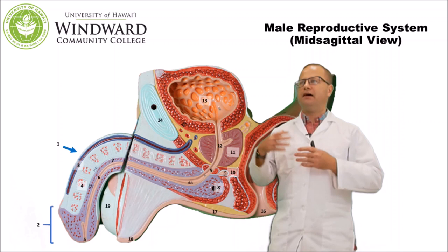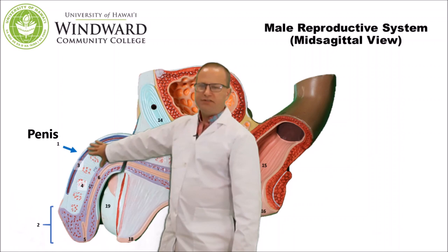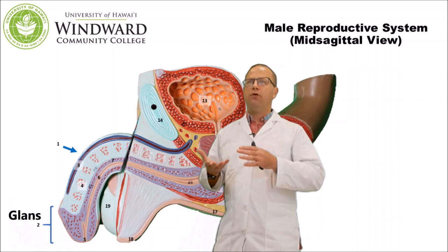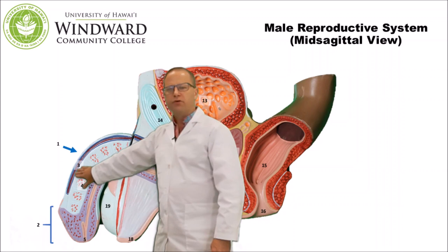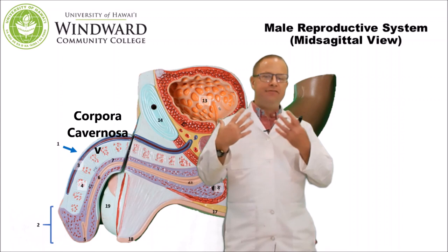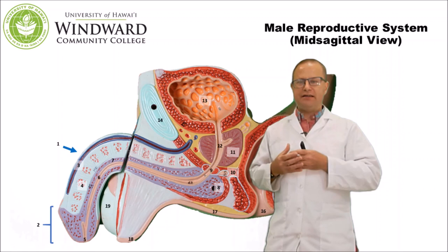Now let's look at the male reproductive anatomy on the ATLE dissectable human torso. Up front is the penis, the organ of intromission. At the tip of the penis is the glans, which contains lots of nerve endings important in male arousal and sexual response. On the dorsal surface is the deep penile vein, important for draining blood after erection. Below that is the corpora cavernosa, erectile tissue that fills with blood during parasympathetic stimulation, engorgeing the penis and pinching off draining veins so it remains stiff.